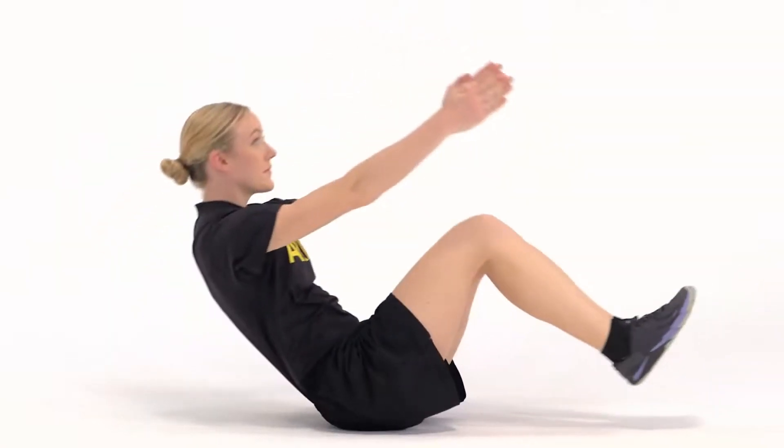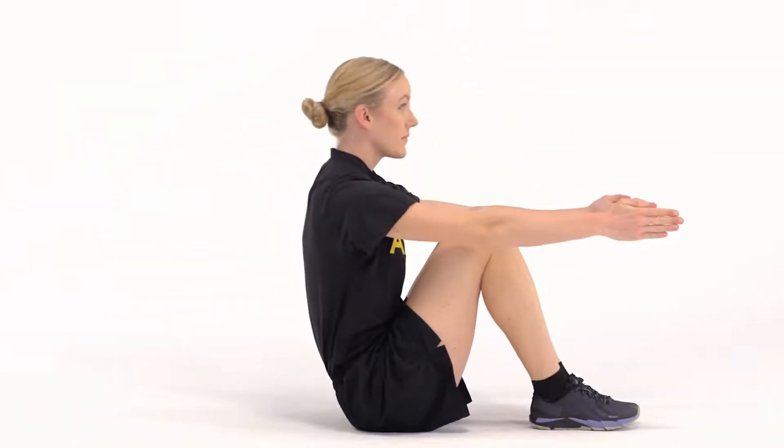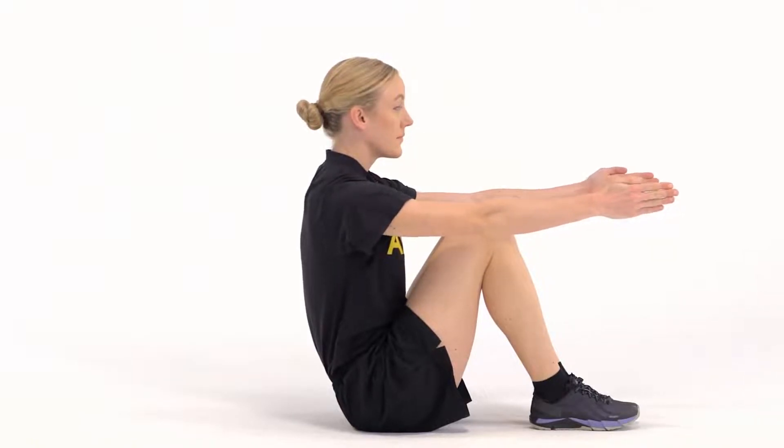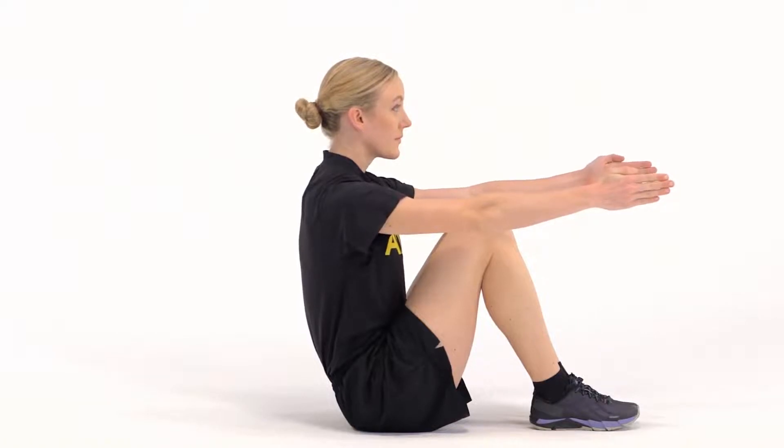On count one, sit up while bending at the hip and knees and swinging arms forward until they are parallel to the ground. At the end of this count, the feet are flat on the ground with knees positioned between the arms. The arms are parallel to the ground.